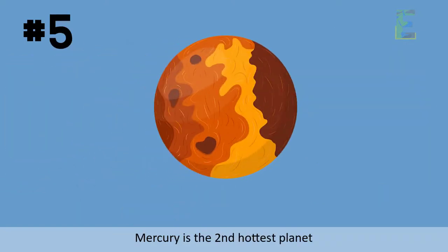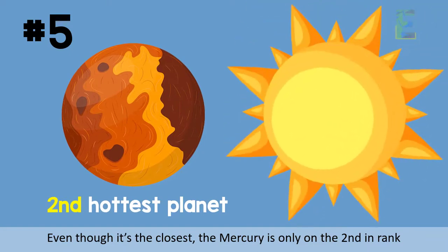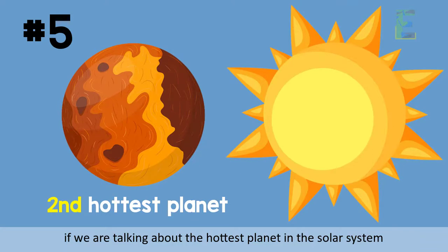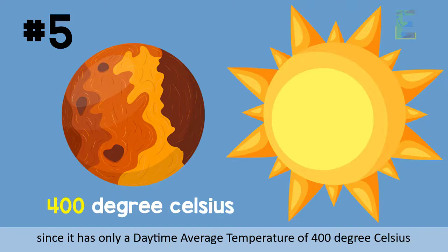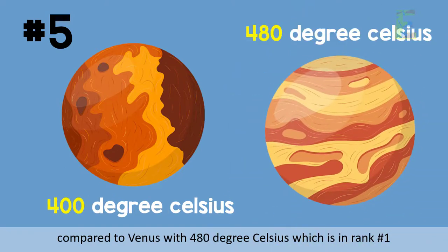Mercury is the second hottest planet. Even though it's the closest to the Sun, Mercury is only on the second in rank if we are talking about the hottest planet in the solar system since it has only a daytime average temperature of 400 degrees Celsius compared to Venus with 480 degrees Celsius which is in rank number 1.